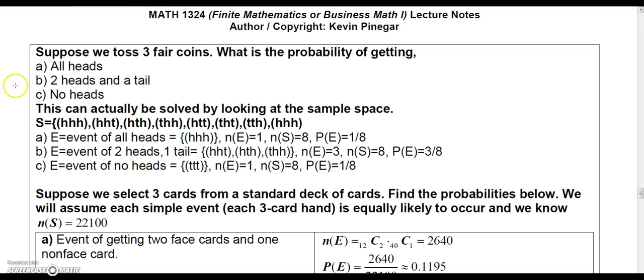Let's look at a couple of theoretical probability problems. Suppose we toss three fair coins and let's find the probability of getting all heads, two heads and one tail, and no heads. Well, this can actually be done by looking at the sample space.